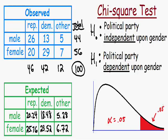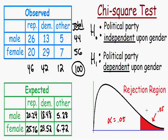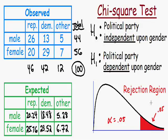This area of 0.05 in the tail is our rejection region, colored in red. The rejection region is important because it allows us to make a conclusion at the end of our test. If the test value falls in the rejection region, we can reject the null hypothesis — that political party is independent of gender — and accept the alternative that political party is dependent on gender.